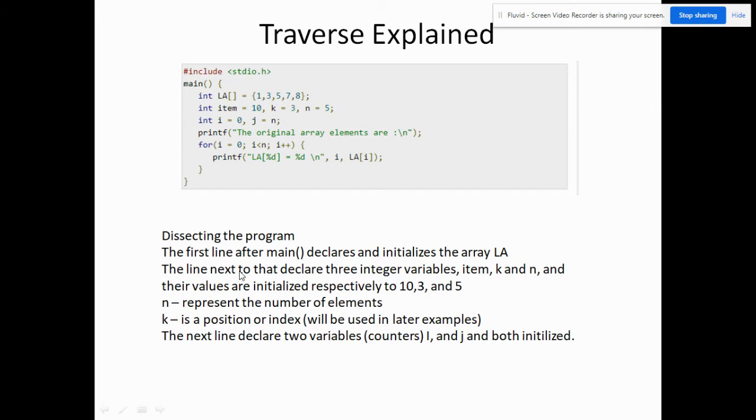The line next to that declares three integers, three integer variables. These are the item, which is initialized to the value of 10, k, which is initialized to the value of 3, and n. And n represent the number of elements. That's why we have five.